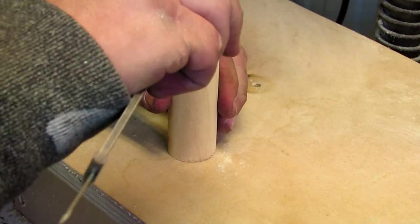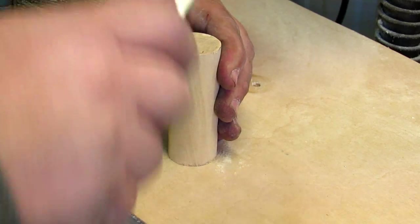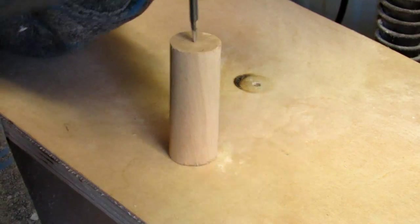Then use a caliper to measure the diameter of the dowel. Split the difference to get the radius and then mark the center. After you have it marked, you can hit it with an awl as well.